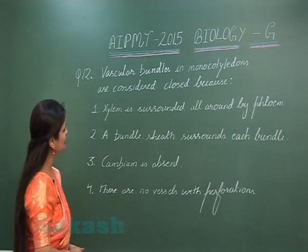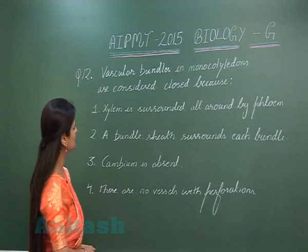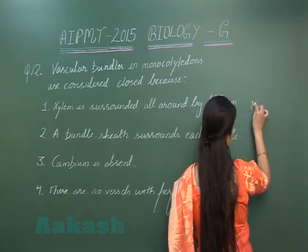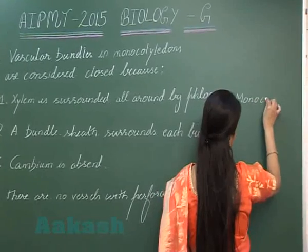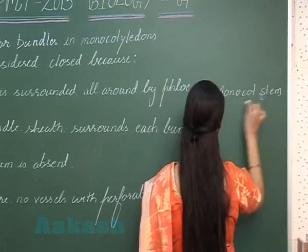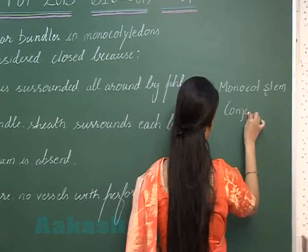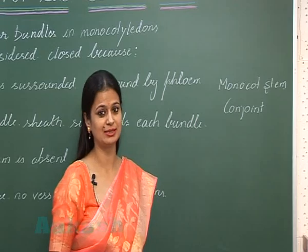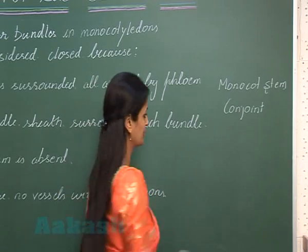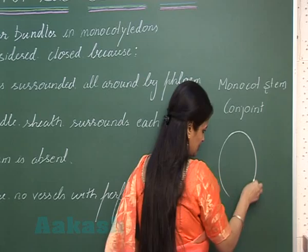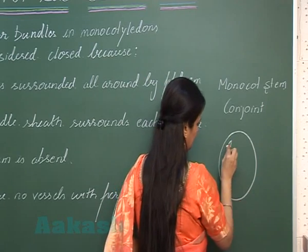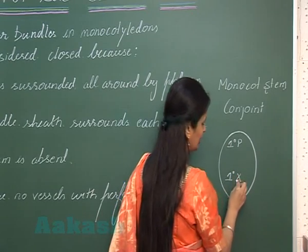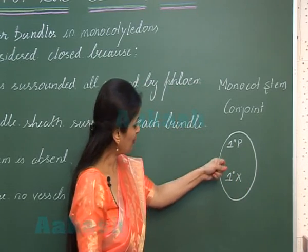Question number 12: Vascular bundles in monocotyledons are considered closed because in the monocot stem there is presence of conjoint vascular bundles — that is xylem and phloem are present at the same radii. So in this vascular bundle, there is primary phloem and primary xylem; the conjoint condition is present.